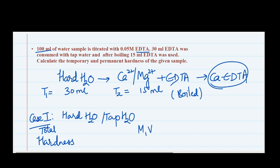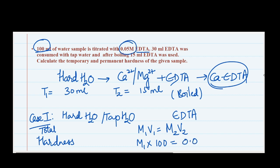In Case 1, we are going to use the equation M1V1 = M2V2, where M1 is the molarity of hard water, V1 is the volume of hard water, and M2 and V2 are for EDTA. Our aim is to find M1, which is the hardness. Volume of water taken is 100 ml. Molarity of EDTA is 0.05, and since we're finding total hardness, we use 30 ml.